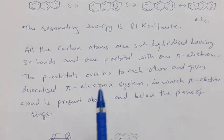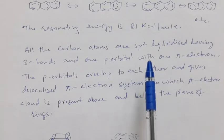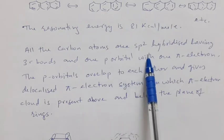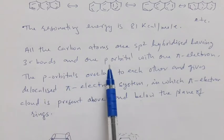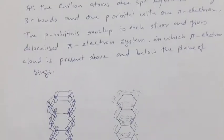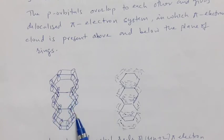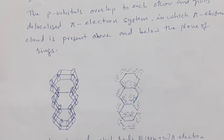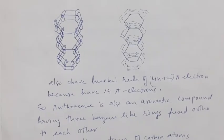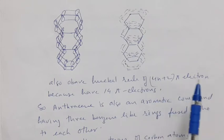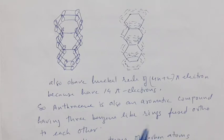All the carbon atoms in anthracene, like benzene and naphthalene, are sp2 hybridized. They have three sigma bonds and one p orbital with one pi electron. The p orbitals overlap each other and give the delocalized pi electron system, in which a pi electron cloud is present above and below the plane of the rings. Anthracene obeys Hückel's rule of aromaticity, 4n+2 pi electrons, because it has 14 pi electrons, confirming it is an aromatic compound.